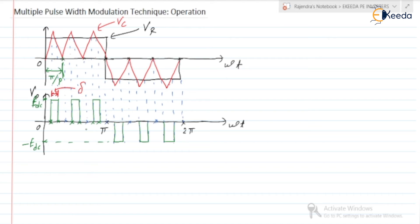So how are the signals generated? In the multiple pulse width modulation technique, the carrier wave is a triangular wave, and the frequency of the carrier wave is greater than that of the reference wave. The reference wave is a square wave completing one cycle from 0 to 2π, with π at the midpoint. So here we can put 5 cycles or 10 cycles of the carrier wave, etc.